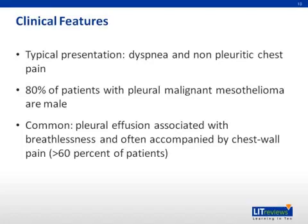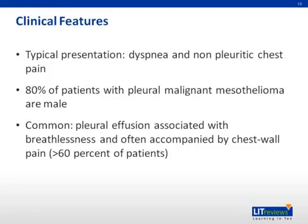This 68-year-old retired construction worker presents with characteristic features of mesothelioma. Mesothelial tumors are primary tumors that arise from mesothelial cells lining the pleural cavity. They produce a hemorrhagic effusion — a bloody effusion in the absence of acute trauma always suggests malignancy. Thoracoscopy with pleural biopsy is usually necessary to make a definitive diagnosis.